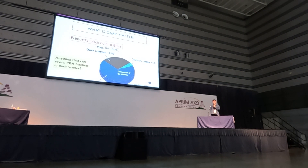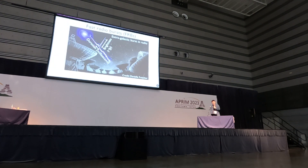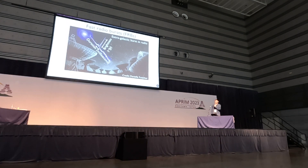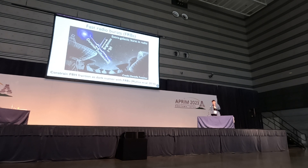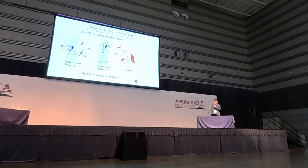You may ask, is there anything that can reveal the PBH fraction in dark matter? I'm going to tell you that yes, we can use fast radio bursts. Fast radio bursts, aka FRBs, are luminous millisecond radio bursts, and most of them are from the extragalactic universe. In Munoz et al. 2016, they constrained the PBH fraction as dark matter with FRBs. In order to do that, you need to detect something called a gravitationally lensed FRB — I'll just call it a lensed FRB.